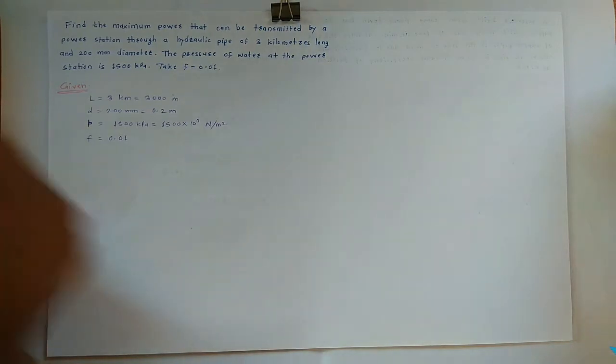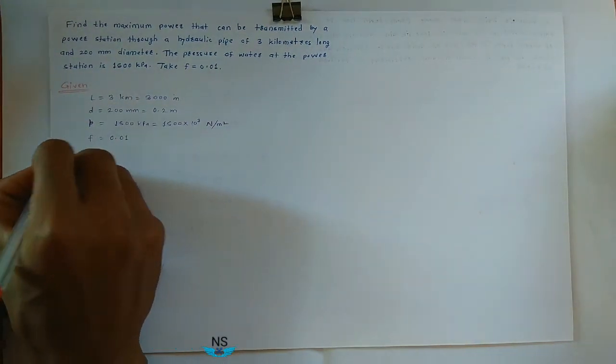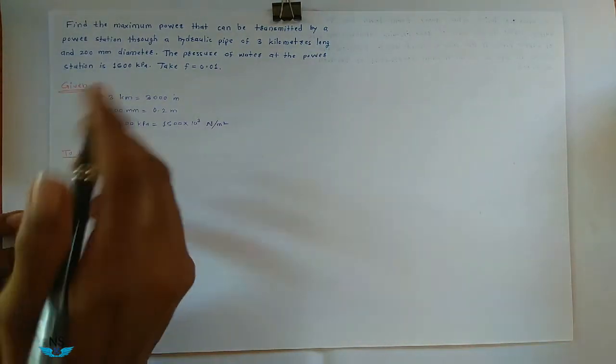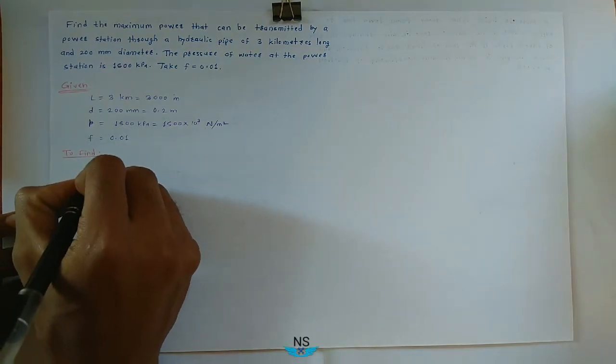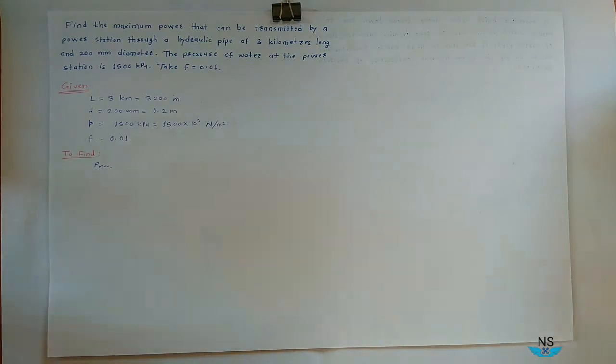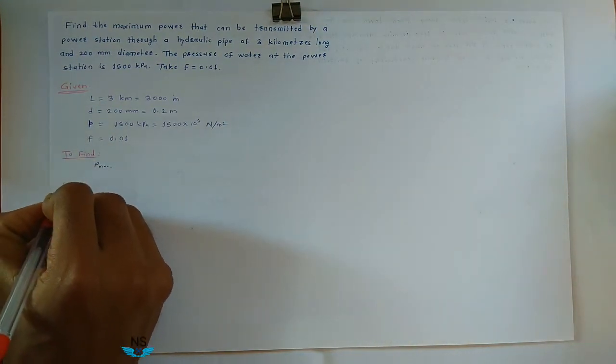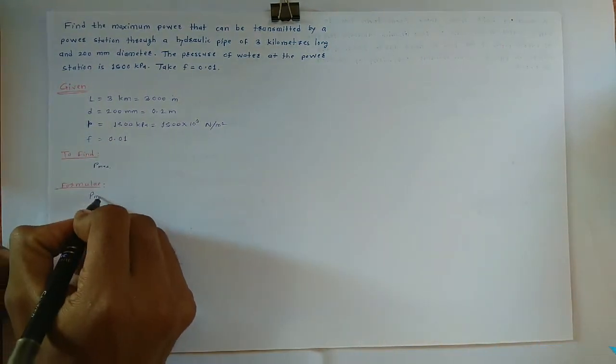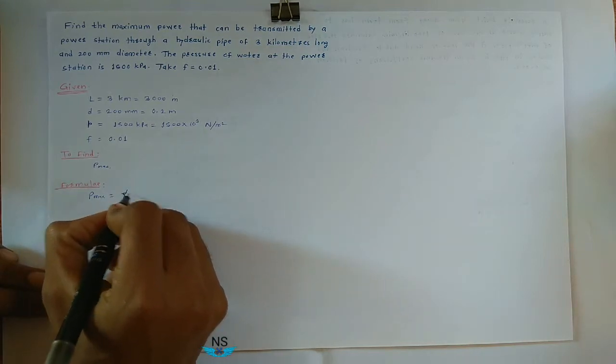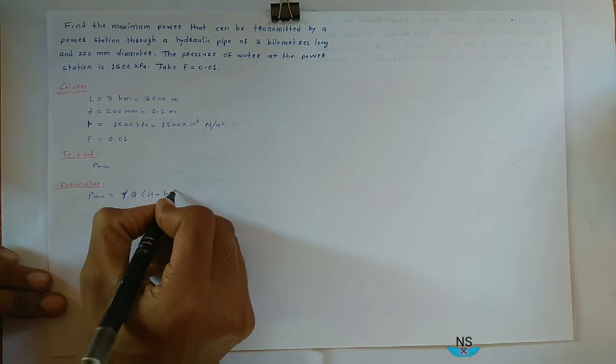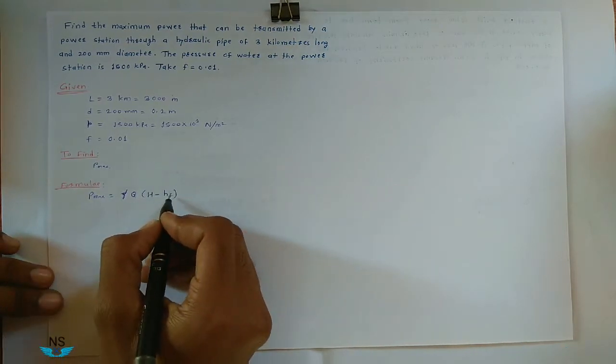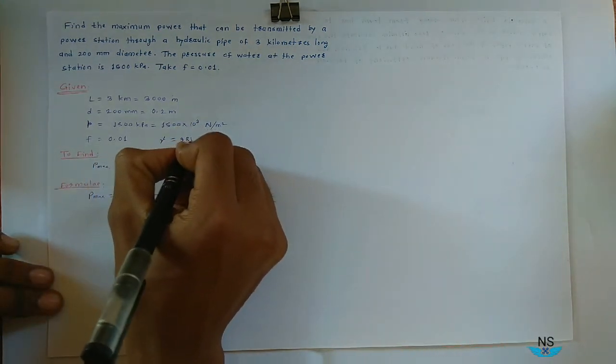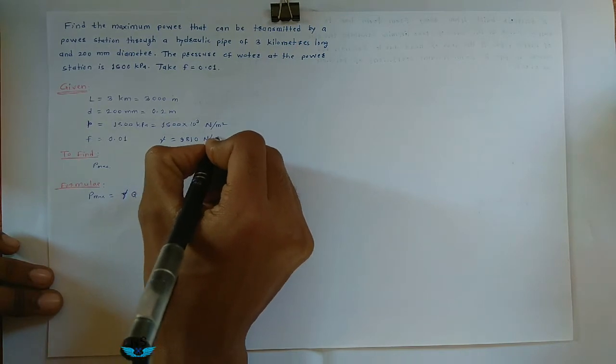We have to find maximum power, Pmax. So formula is: Power, Pmax is equal to gamma into Q into H minus HF. So we have to find H, HF, and Q. Gamma is known, gamma is equal to 9810 for water, newton per meter cube.